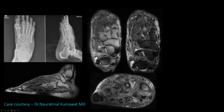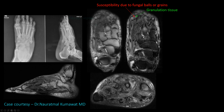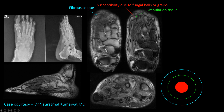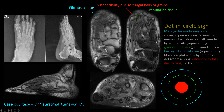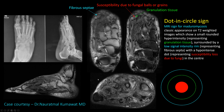This is a classical sign described in Madura mycosis. The central hypointense area is due to susceptibility from fungal balls or grains, the peripheral hyperintense area represents granulation tissue, and the outermost hypointense lines surrounding the hyperintense area are due to fibrous septae. This is the classical dot-in-circle sign seen in Madura mycosis. Thanks to Dr. Naurat Mal for contributing this case.